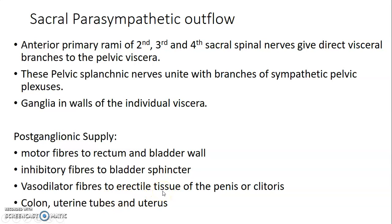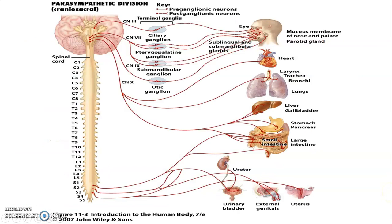Parasympathetic stimulation causes contraction of bladder muscles and rectal muscles. However, parasympathetic stimulation inhibits the bladder sphincters and causes vasodilation within the erectile tissue of the penis and clitoris. To summarize, the parasympathetic system is craniosacral: the third, seventh, ninth, and tenth cranial nerves plus S2, S3, S4 spinal nerve components.